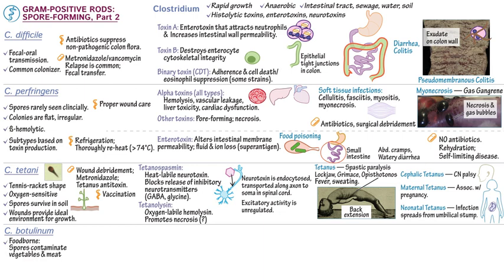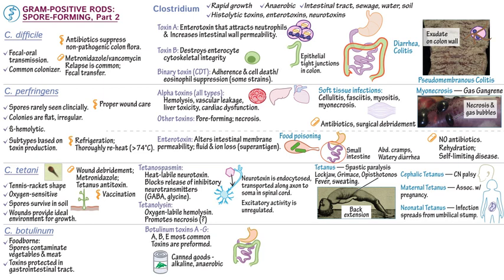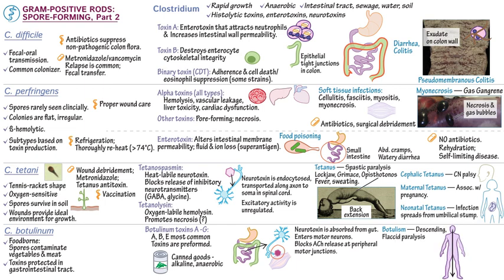Clostridium botulinum causes food-borne disease. Spores tend to contaminate vegetables and meat, and its toxins are protected from degradation within the gastrointestinal tract. C. botulinum produces exotoxins A through G; types A, B, and E are responsible for most human infections. The toxins are preformed, particularly in canned goods, which provide ideal alkaline and anaerobic environments. From the gut, neurotoxins are absorbed and delivered to motor neurons; upon endocytosis, they block acetylcholine release at peripheral motor junctions. Because this neurotoxin prevents muscle contraction, botulism is characterized by flaccid paralysis.